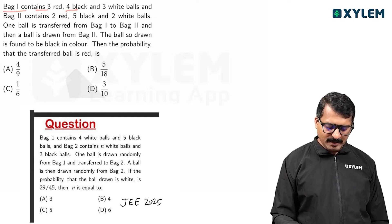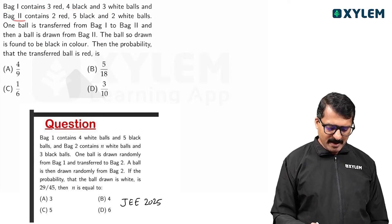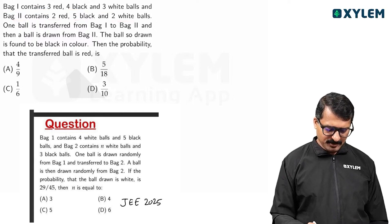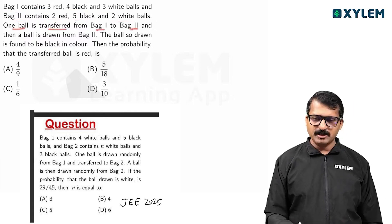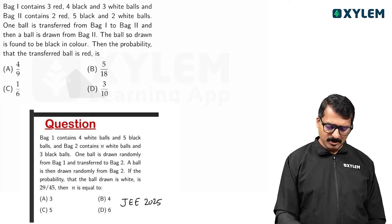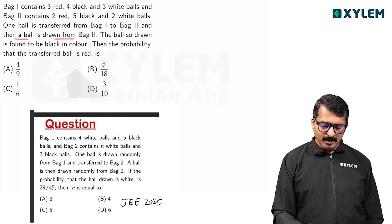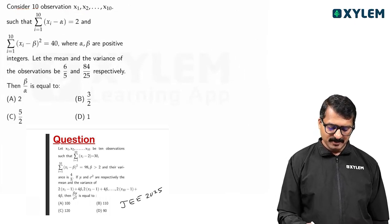Bag 1 contains 3 red, 4 black, and 3 white balls and bag 2 contains 2 red, 5 black, and 2 white balls. One ball is transferred from bag 1 to bag 2, and then a ball is drawn from bag 2.